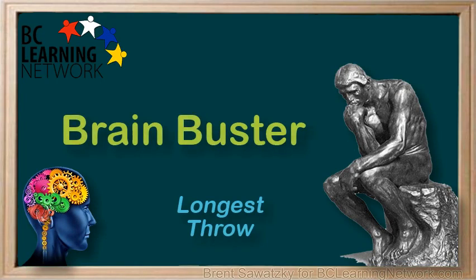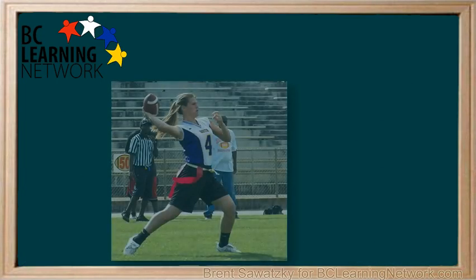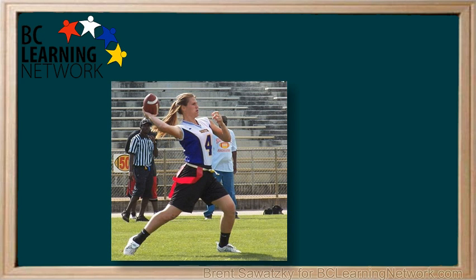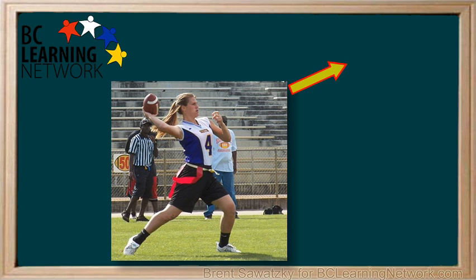A physics brain buster. You're a quick substitute for the football team's quarterback. You have a great receiver and need to throw the ball as far as possible. How do you throw that ball? Do you aim it straight ahead so the ball most quickly moves forward? Do you throw it more upwards so it has lots of air time to move forward? Or do you throw it somewhere in between?